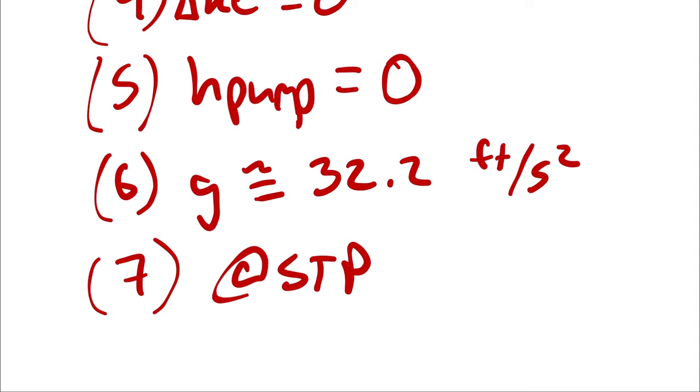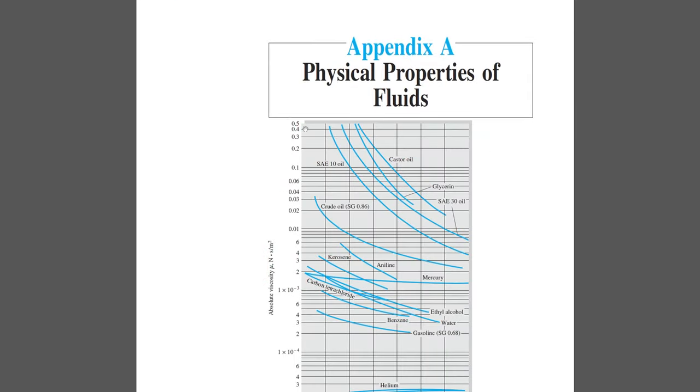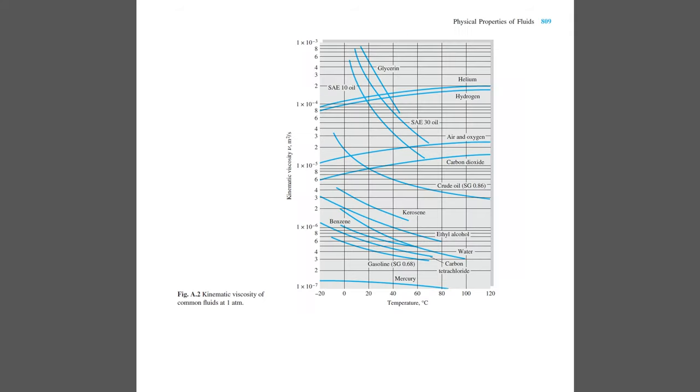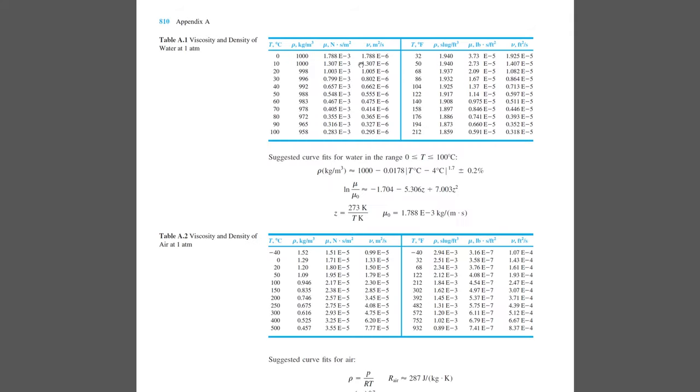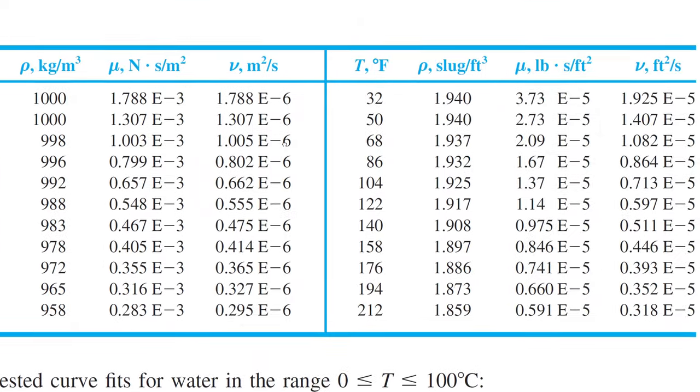So if we jump into the appendix of our textbook, we can get the density of water from table A1 in imperial units.